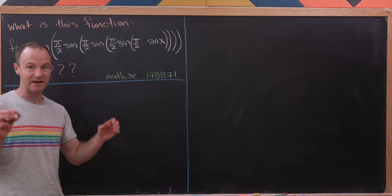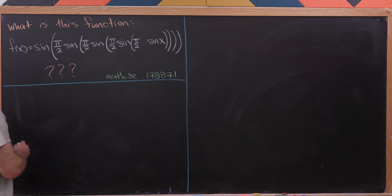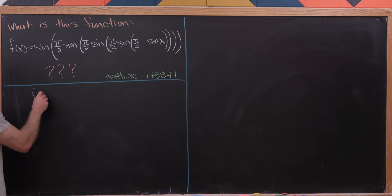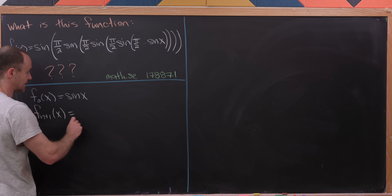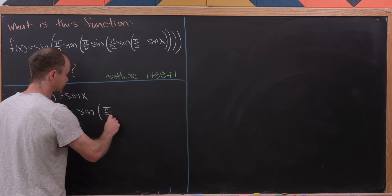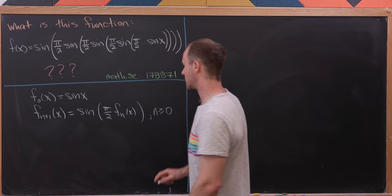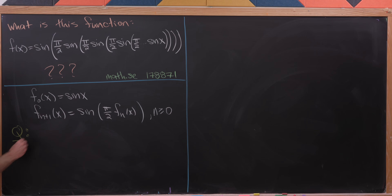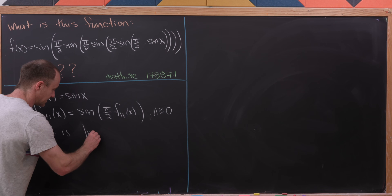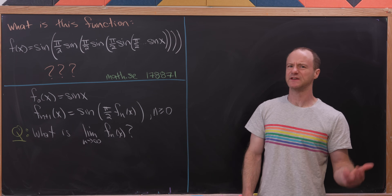Anytime you see this kind of infinite nesting, a good way of defining it is via a recursion of a sequence of functions. We'll introduce the notation: f sub 0 of x equals sine of x, and f sub n+1 of x equals sine of pi over 2 times f sub n of x, holding for all n ≥ 0. This puts the question in terms of the limit as n goes to infinity of f sub n of x — and that would be our function f of x, of course if this converges.